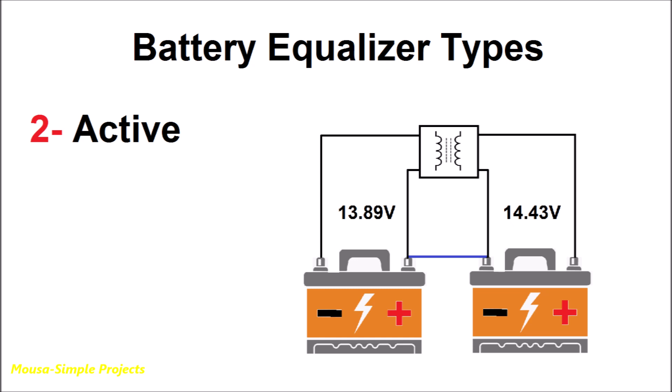The second type is called active battery equalizer. In this method the battery equalizer uses the excessive energy that is stored in the battery with higher voltage to charge the other battery that has lower voltage. So the active battery equalizer has higher efficiency than the passive type, but it is expensive and its circuitry is complicated.